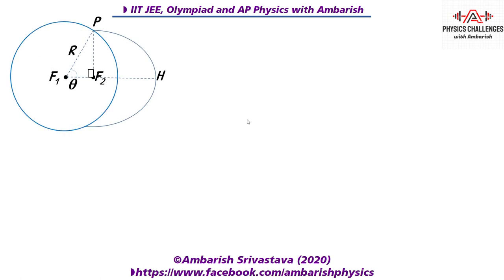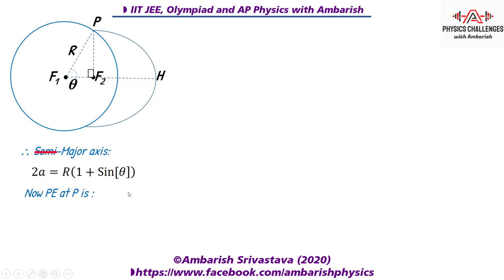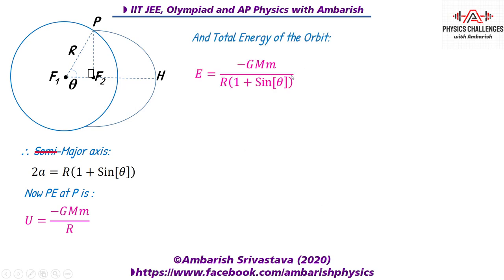So the major axis 2a = PF1 + PF2 = R + R sinθ = R(1 + sinθ). The potential energy at P, which is on the surface of Earth, is U = −GMm / R. The total energy of the orbit is then E = −GMm / [2a] = −GMm / [R(1 + sinθ)].